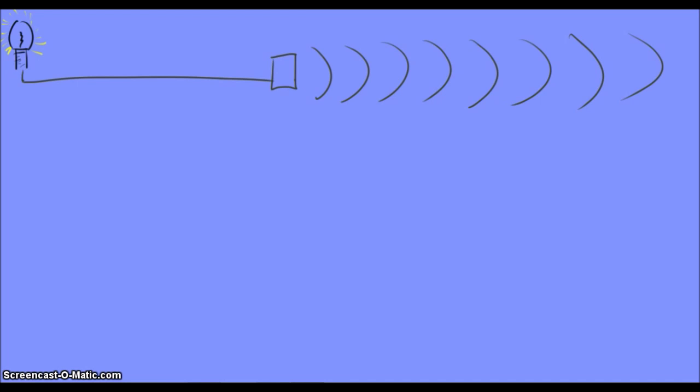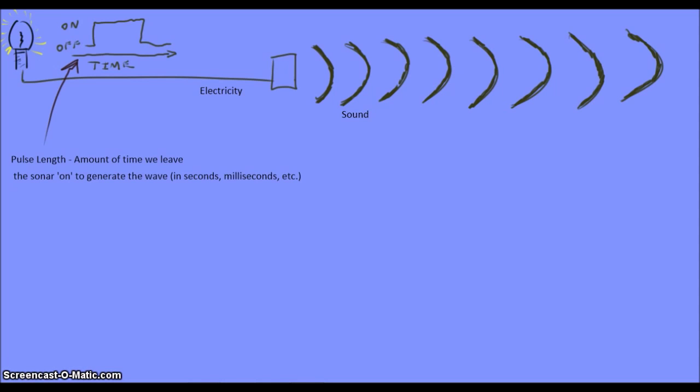Let's start with pulses. When we talked about transducers turning energy into sound waves, we didn't talk about how much electricity you should use. If you leave the electricity on for a longer amount of time, you'll get a wider wave coming from the transducer. Our pulse length is the amount of time that we leave the sonar on to generate that wave.